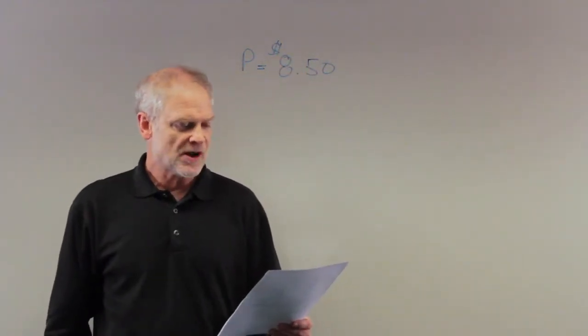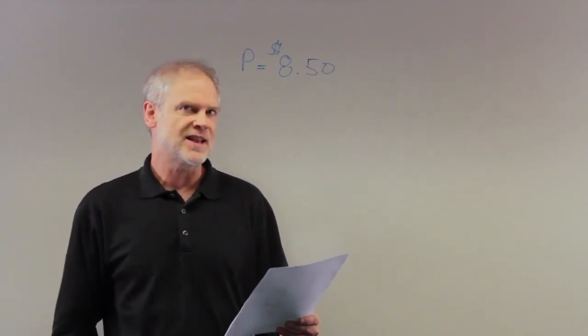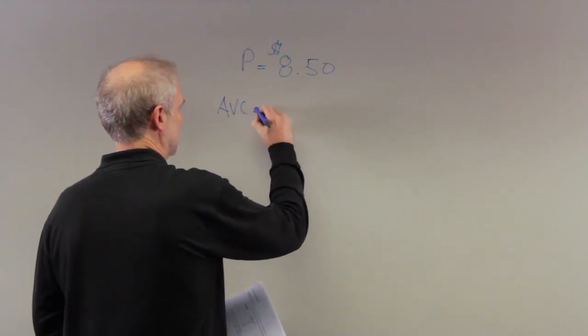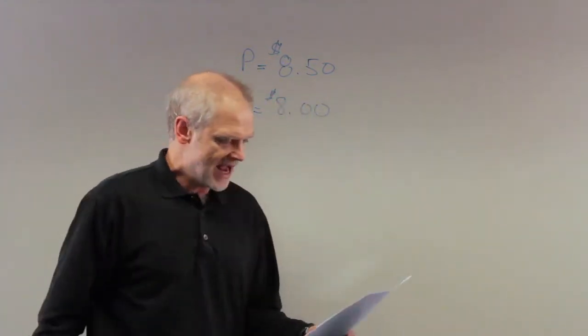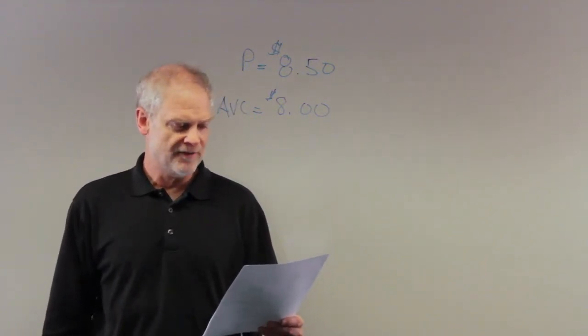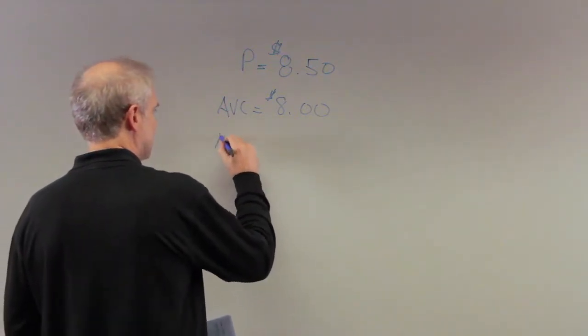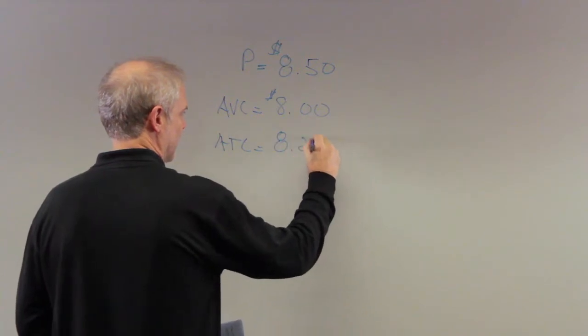At her profit-maximizing level of production, the average variable cost is $8. So AVC equals $8. Lastly, it tells us the average total cost is $8.25 at this particular level of output. So we're going to put ATC, average total cost, is equal to $8.25.